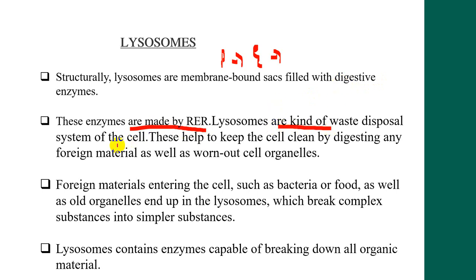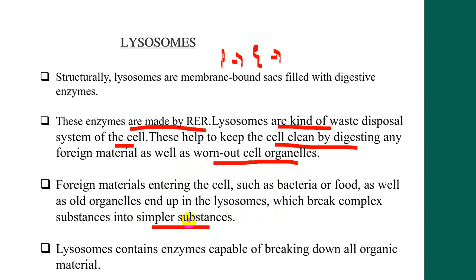Lysosomes are the waste disposal system of the cell. They help keep the cell clean by digesting any foreign material as well as worn-out cell organelles. Foreign materials entering the cells, such as bacteria and food, as well as old organelles, end up in the lysosomes.